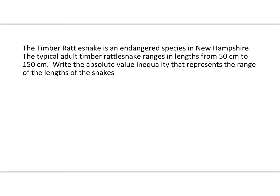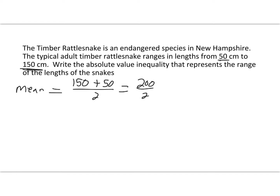Let's take a look at our first example. The timber rattlesnake is an endangered species in New Hampshire. The typical adult timber rattlesnake ranges in length from 50 centimeters to 150 centimeters. Write the absolute value inequality that represents the range of the lengths of the snake. So we pick out x1 as 50 and x2 as 150. First, we find the mean: 150 plus 50 divided by 2 equals 200 divided by 2, which is 100.